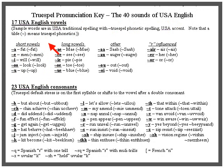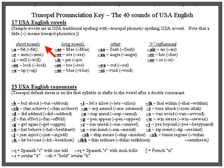Of the 17 vowel sounds, you have the short vowels, the long vowels, what we'll call other, and the influenced vowels. There are five short vowels.